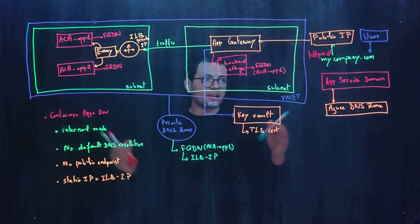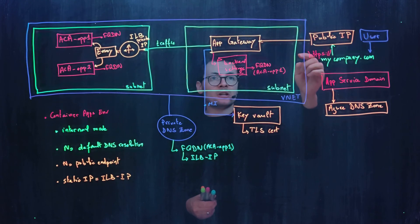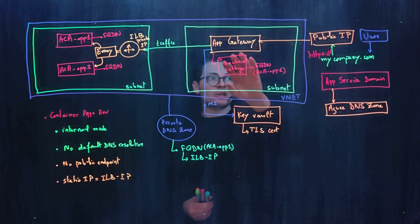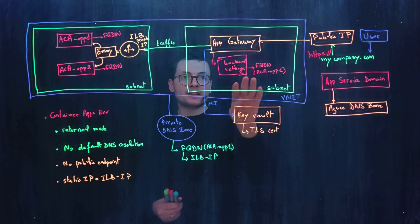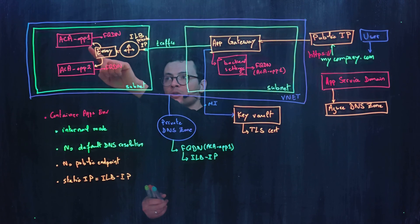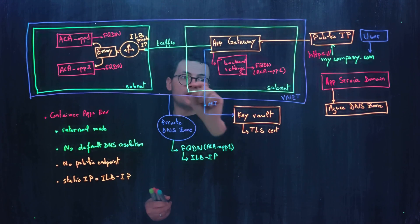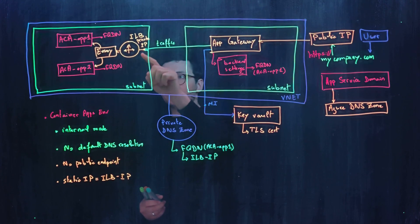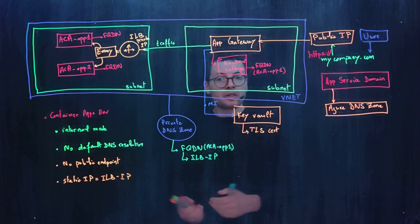With this architecture, the user connects via HTTPS on the custom domain name, gets routed to the Azure Application Gateway through its public IP address, and the backend settings route traffic to the FQDN of the Azure Container Apps application. The Envoy proxy and internal load balancer receive the traffic, check the FQDN, and route it to the correct container app.